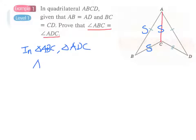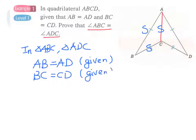We have AB equals AD. And this is a given condition. Again, BC equals CD, another given condition.